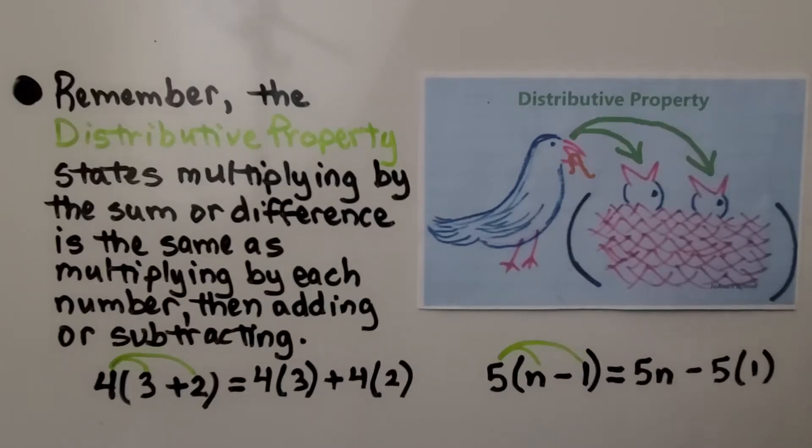Remember, the distributive property states multiplying by a sum or difference is the same as multiplying by each number then adding or subtracting. So we can do 4 times 3, which is 12, plus 4 times 2, which is 8. Or we could just add 3 plus 2 is 5 and do 4 times 5. We'll get the same answer. And if we're subtracting, we can do 5n minus 5 times 1.